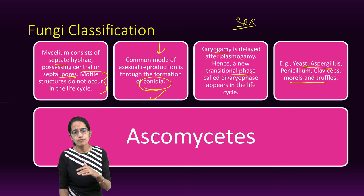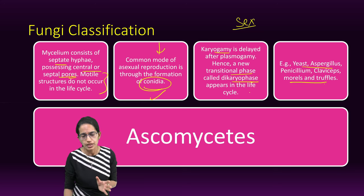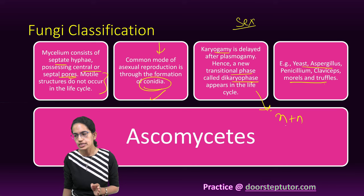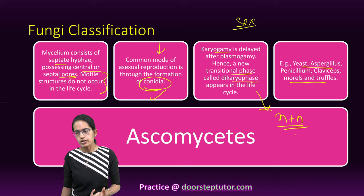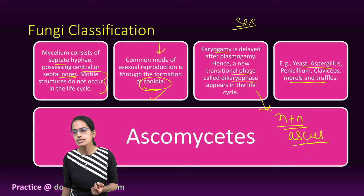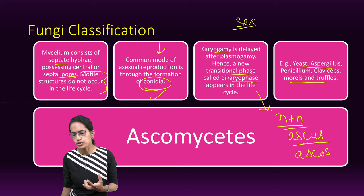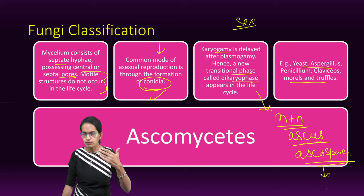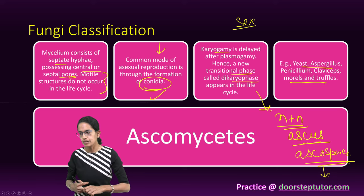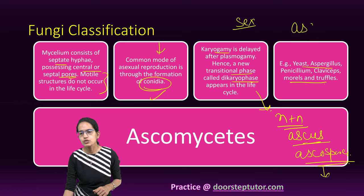There is a transition phase called the dikaryophase that appears. The cells in the dikaryophase are known as dikaryotic cells, which have two nuclei (N+N). Some dikaryotic cells also function as ascus mother cells and have the capability to produce ascospores. Ascospores are produced internally and get arranged in free or aggregated form with the dikaryotic mycelium, forming ascocarps.